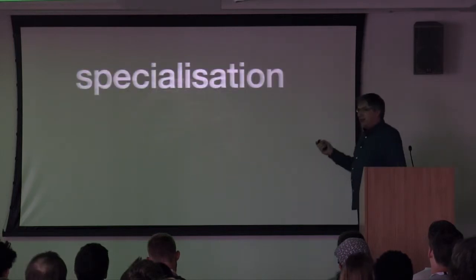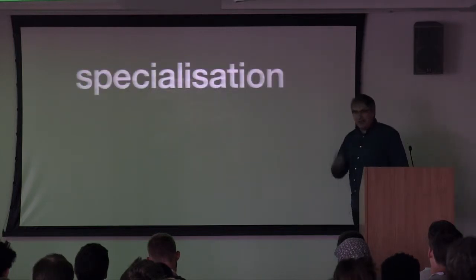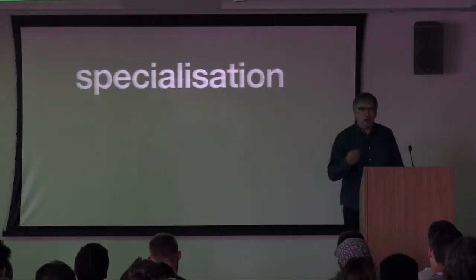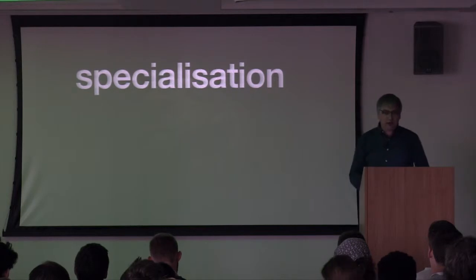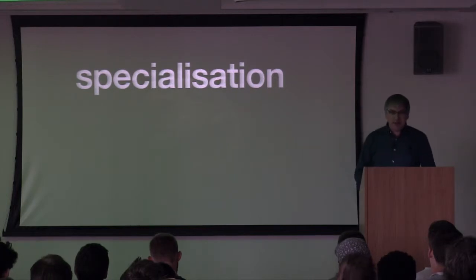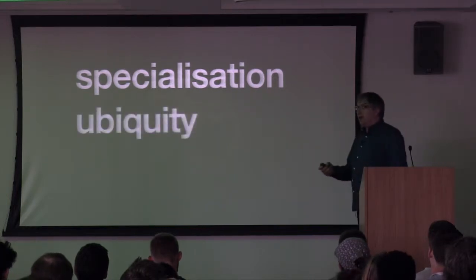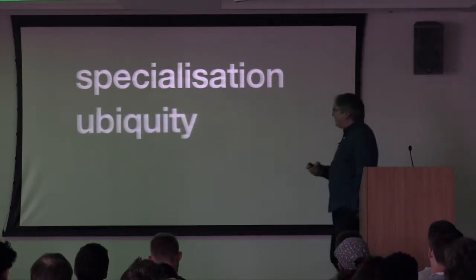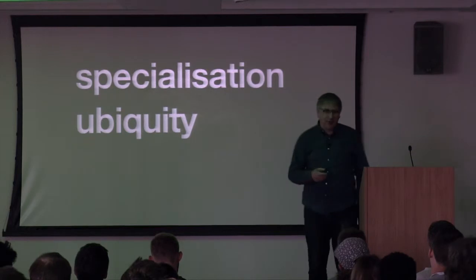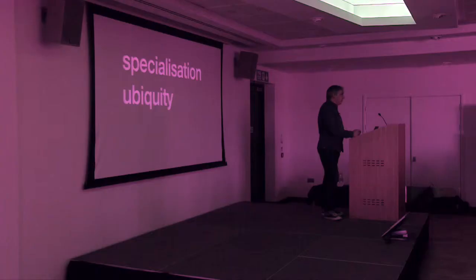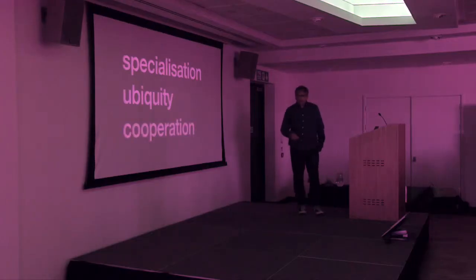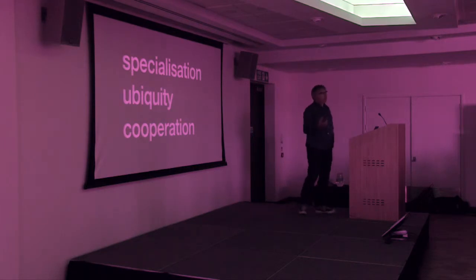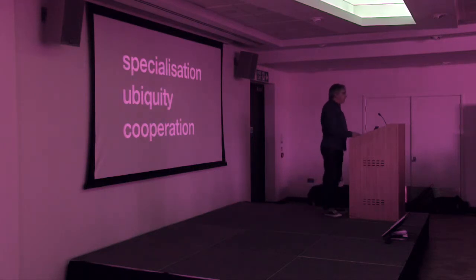Like this trend towards specialization — a life form gets really, really good at doing one thing. Ubiquity: life finds a way, trying to spread as far as possible. And really interestingly, cooperation — that more could be accomplished by a group than could be accomplished by an individual.